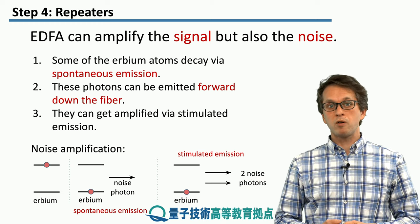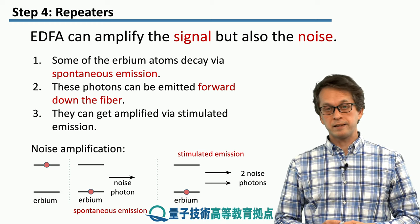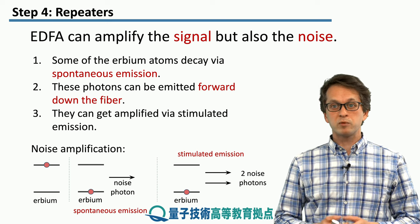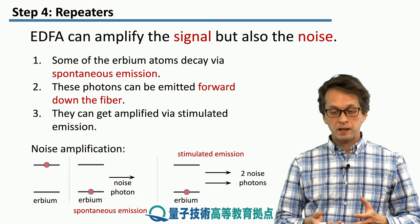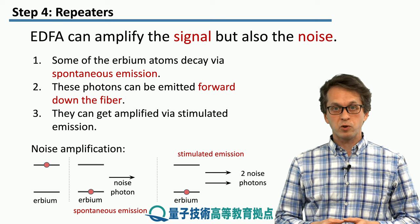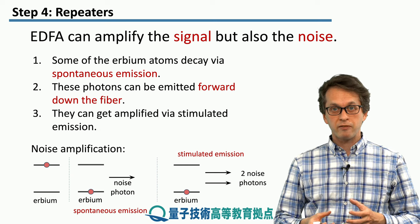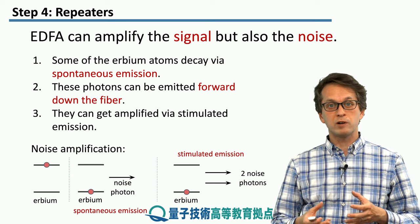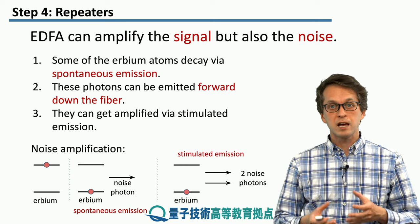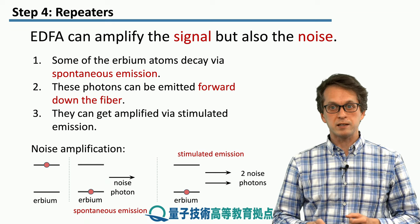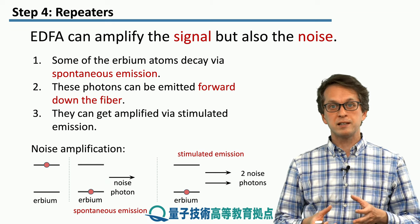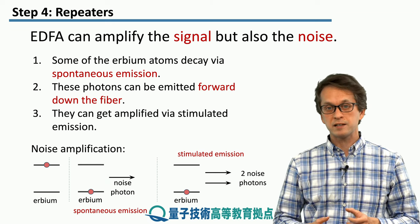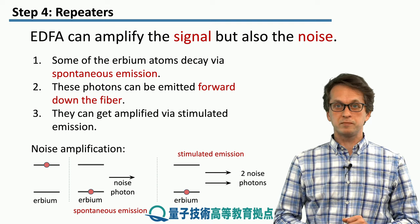So this is the basic principle of a classical repeater. Now we will see how the sources of noise affect the propagation of signals over long distances in the quantum case, and mainly we will see that the set of challenges facing us there are completely different.